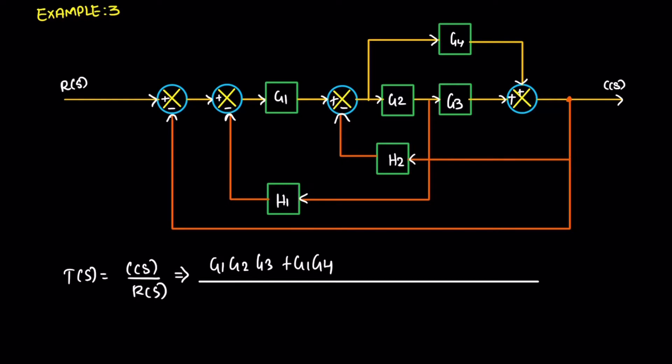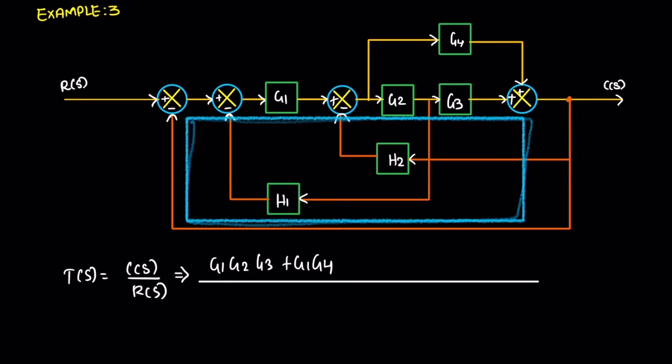For the first summing point, one plus, the gain value is G1, G2, and G3. The bottom part is just one only.